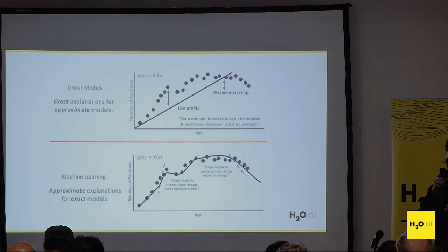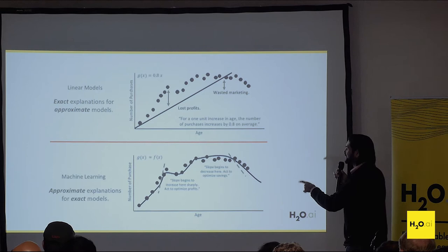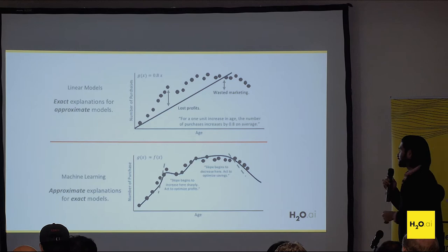With a machine learning model, you get approximate explanations for exact models. You can see the machine learning model is fitting exactly to the data — it fits very well — but explaining this is quite difficult. You can't make the same straightforward statement you made with the linear model.